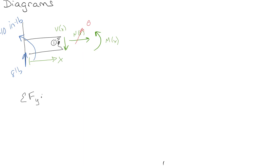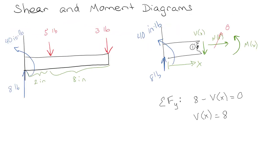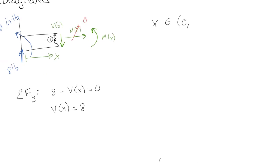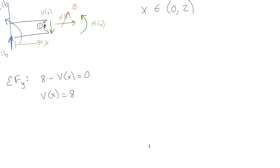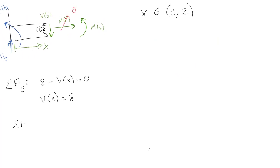I have 8 going up and V as a function of x going down, so that needs to equal zero. So V(x) is equal to 8. This is valid for x in the range from zero to wherever that five pounds showed up, which is at 2. So anywhere between zero and two this is going to be valid. Now let's take the sum of the moments about that point.